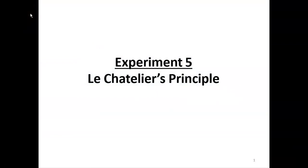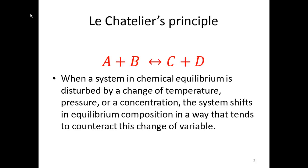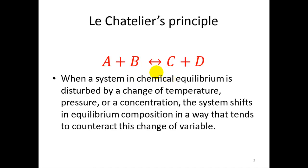In experiment number five, you will be working on Le Chatelier's principle and looking at the different applications using five different equilibrium reactions. Le Chatelier's principle has to do with alterations in an equilibrium. The back and forth arrow means the reaction is at equilibrium. There will be A and B reactants plus C and D products when the reaction is done, and the equilibrium will counteract whatever you've done to it.